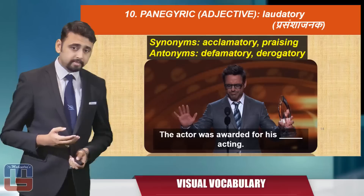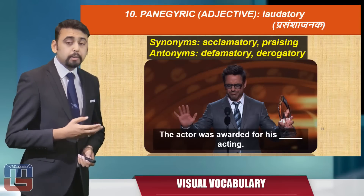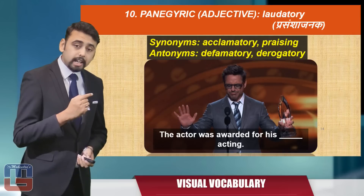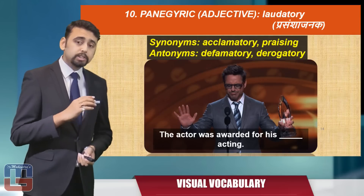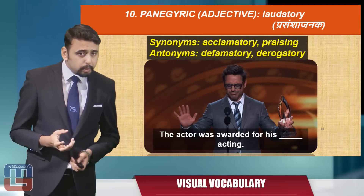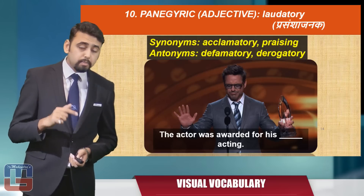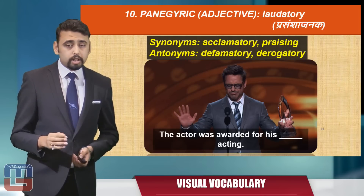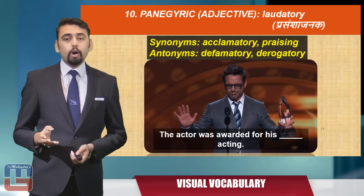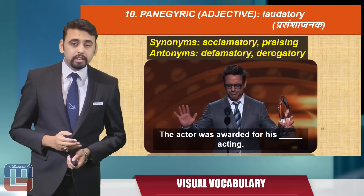The sentence given is: 'The actor was awarded for his blank space acting.' The word in question is 'panegyric,' so the sentence becomes: 'The actor was awarded for his panegyric acting.' Let's now move forward to today's vocab challenge.